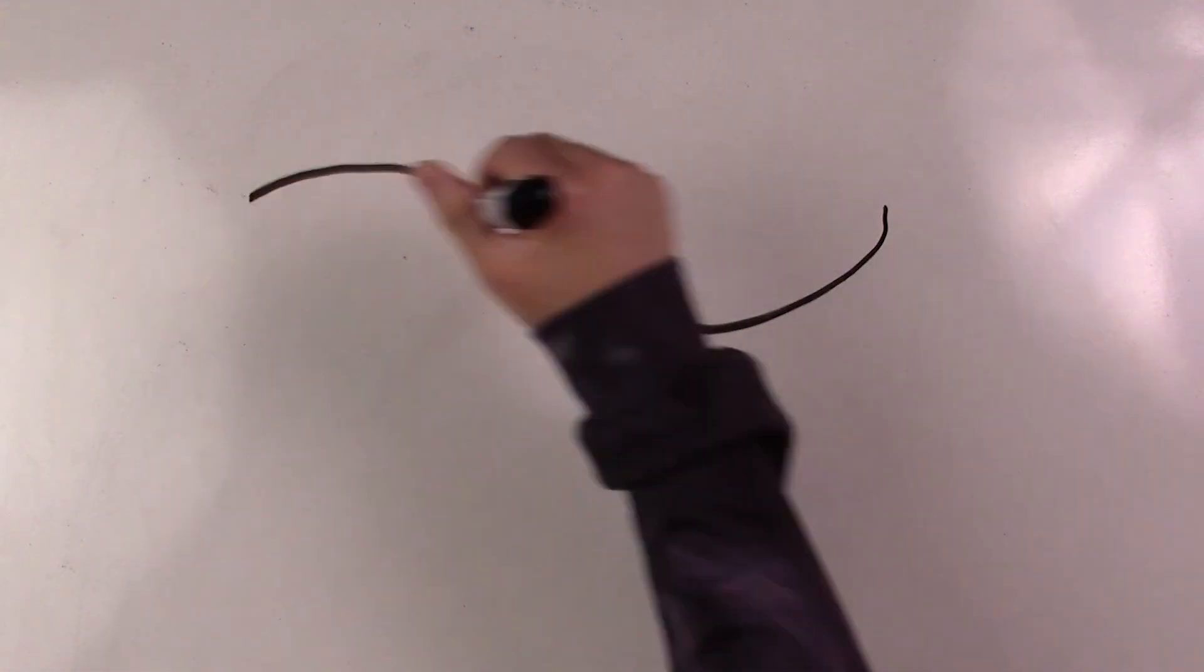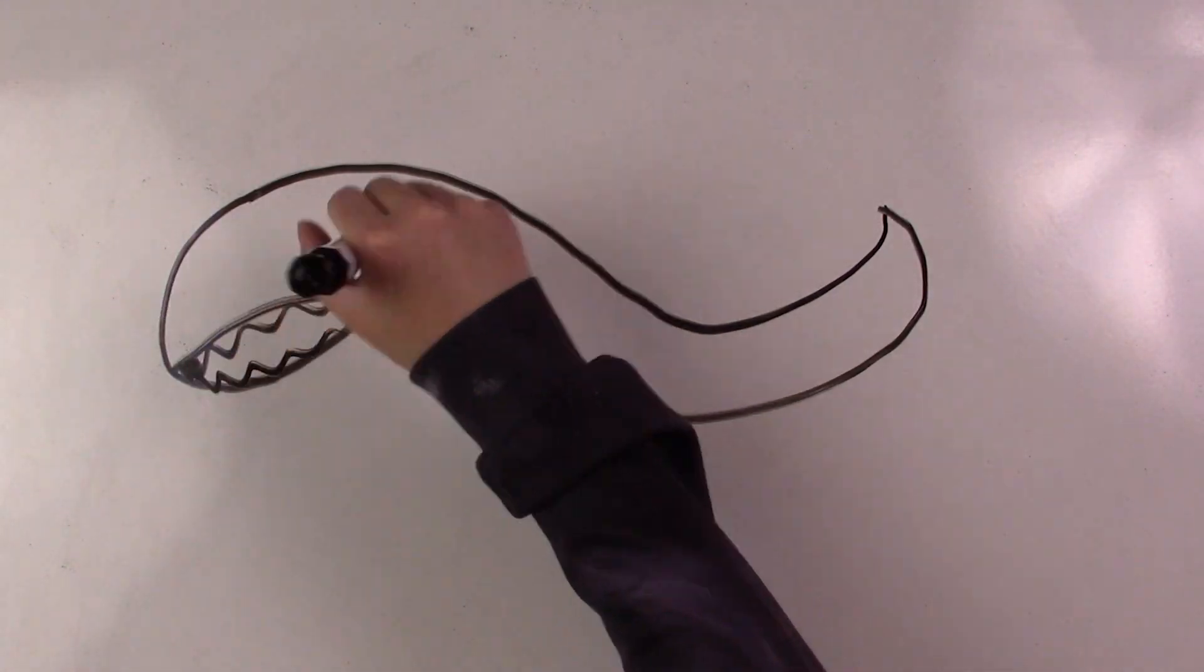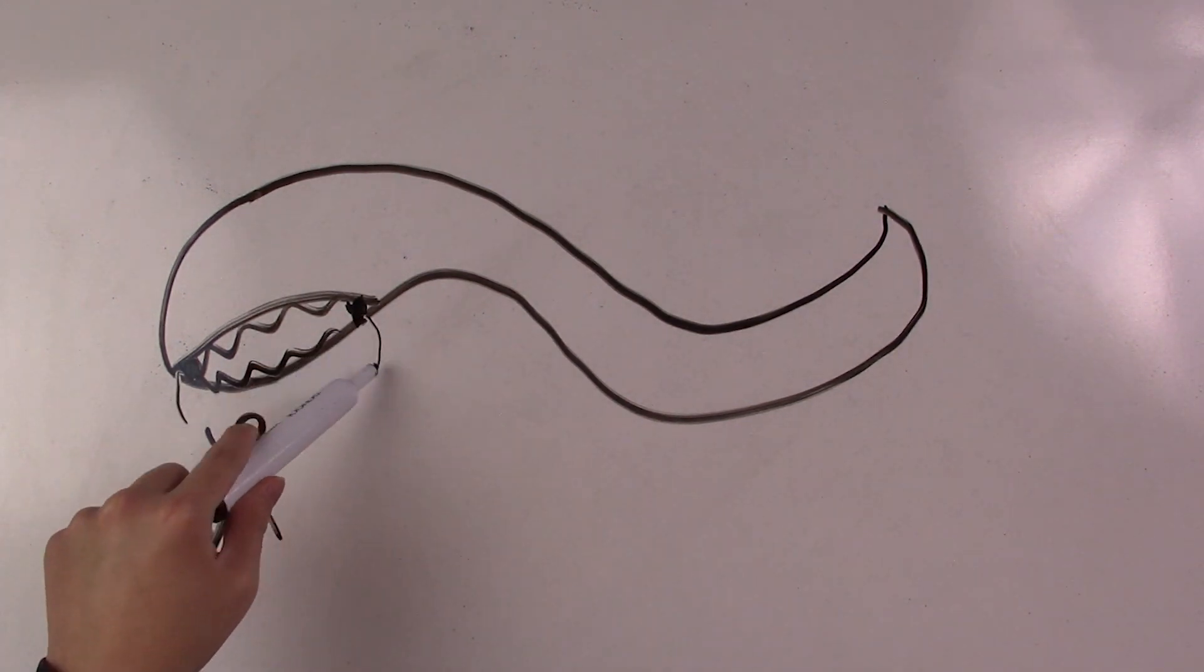Number 2, the death worm. A large red-skinned worm that lives in sand and has large teeth that can even swallow people whole.